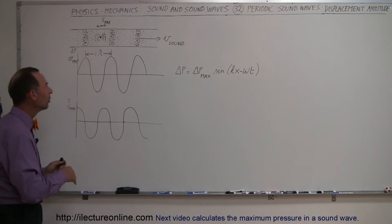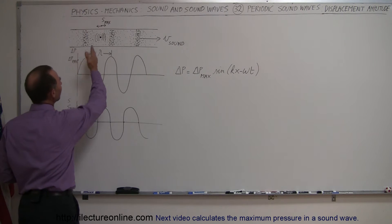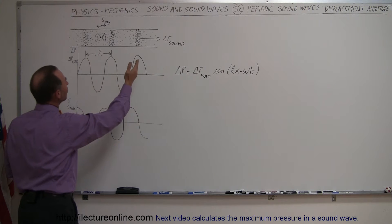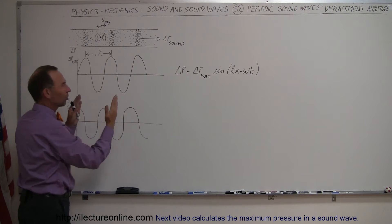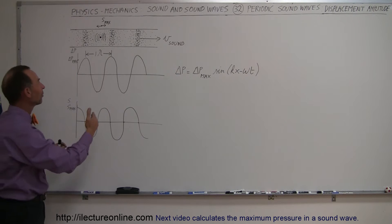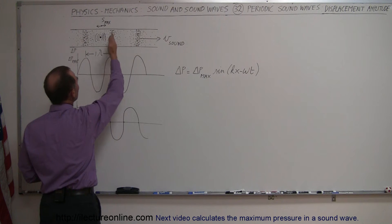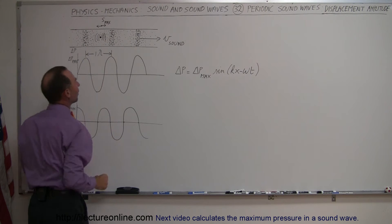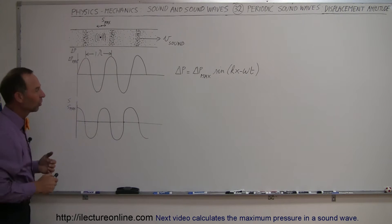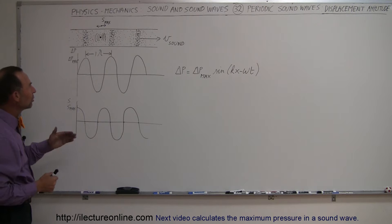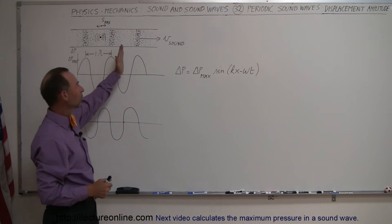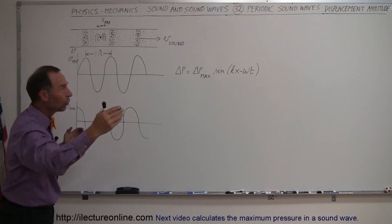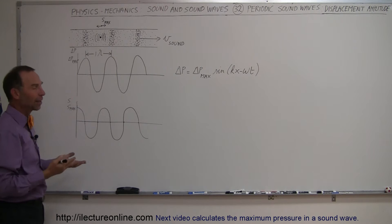In the previous video, we saw how a sound wave, a periodic sound wave could be produced by a moving piston that causes the molecules to be compressed together, therefore forming higher pressure regions. And then when the piston moves back, forming what we call rarefactions. So we have high pressure and low pressure regions, and those high and low pressure regions move through the air at the speed of sound.